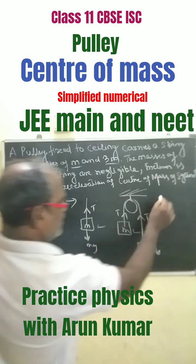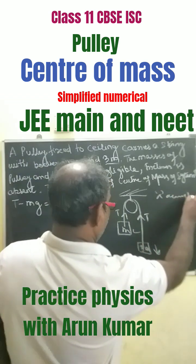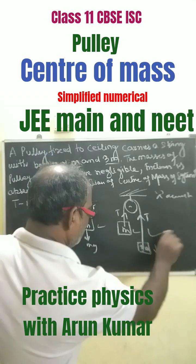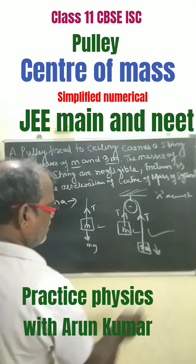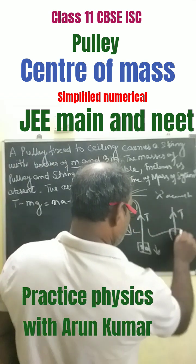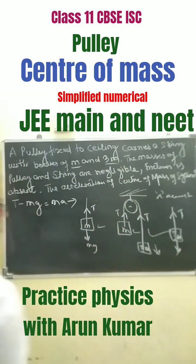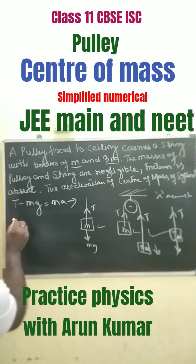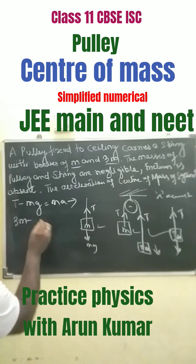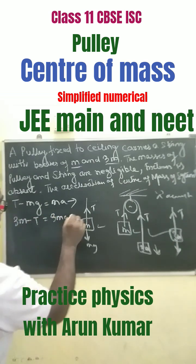Let A be the acceleration of the body. For mass 3M, since it moves downward, the equation is: 3Mg minus T equals 3MA. This is equation 2.